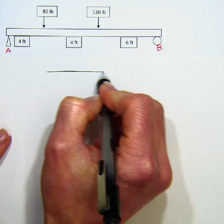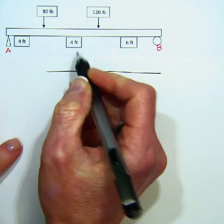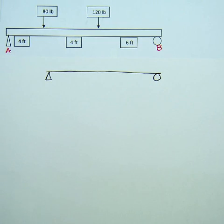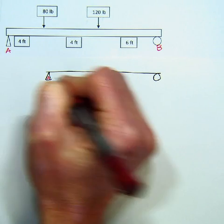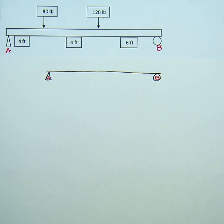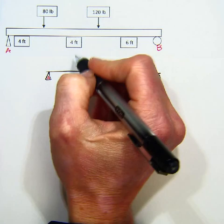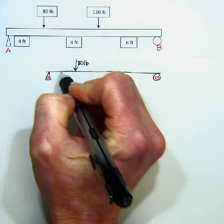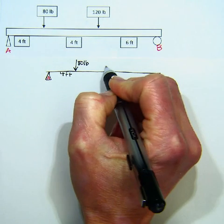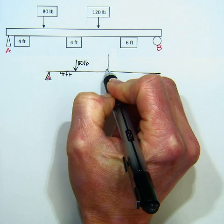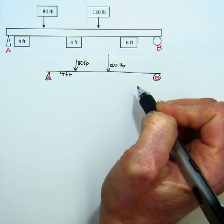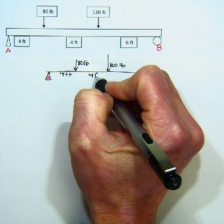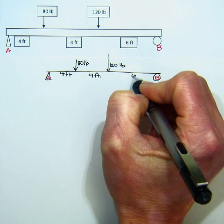So I'm going to put the beam as just a simple line segment. Here is my pen and here's the roller. I'm still going to label them A and B. And then I have 80 pounds of force here, 4 feet away. Another 4 feet away I have 120 pounds of force. And then there's 6 feet this way.